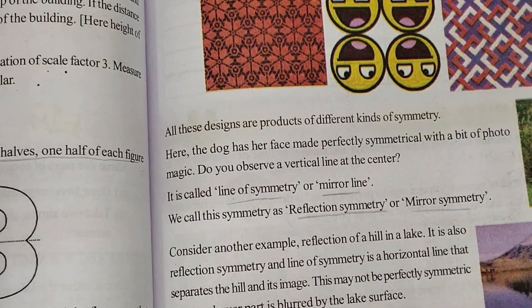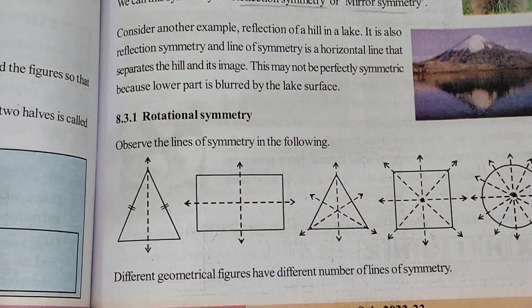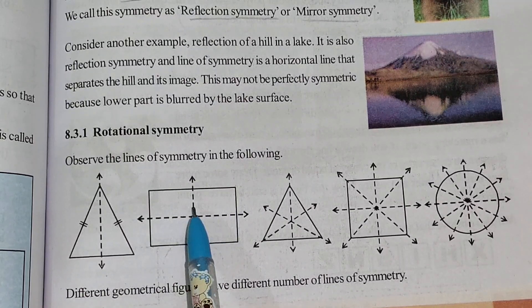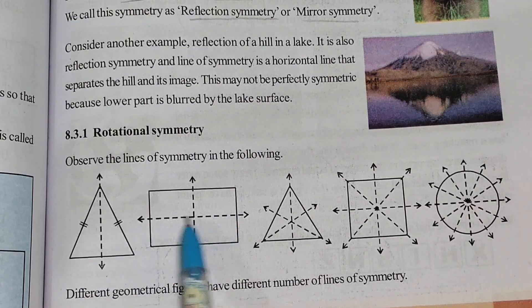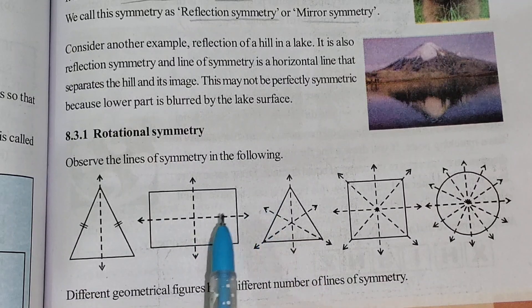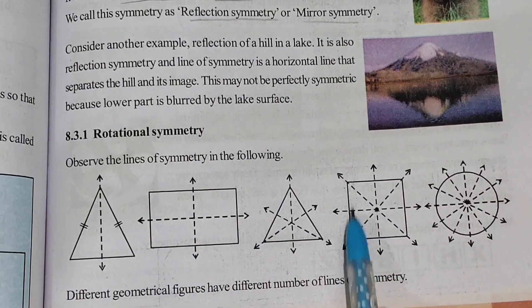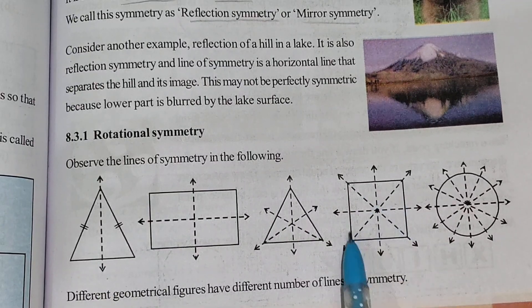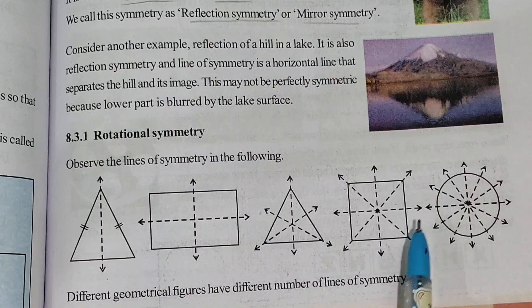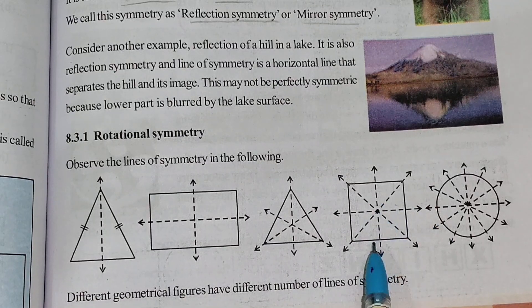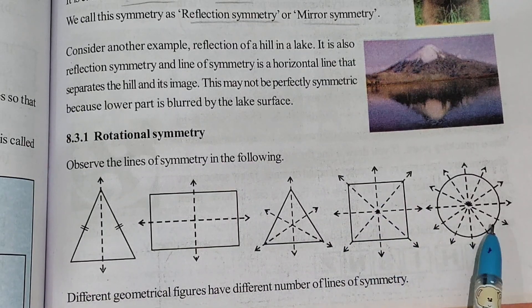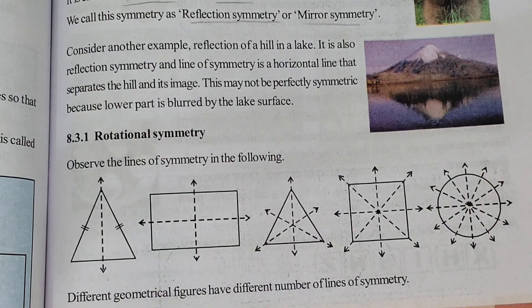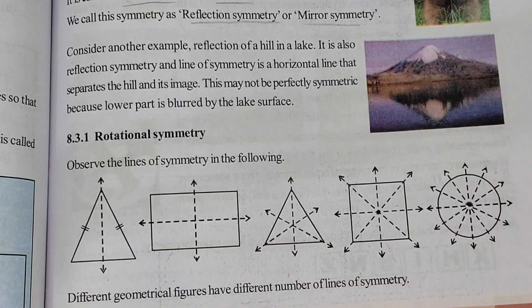Next is rotational symmetry. Here, observe these pictures. For a rectangle, we rotate it 180 degrees and it remains a symmetry diagram. For a square, we rotate 90 degrees and it is symmetric again. Rotating another 90 degrees also gives symmetry. A square has four symmetry lines. A circle also has rotational symmetry — rotating it still gives symmetry. That is rotational symmetry.